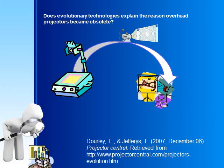Evolutionary technologies provides a reasonable explanation of the obsolescence of the overhead projector. New technologies enhanced the overhead projector's abilities, as seen in the digital projection system. Interestingly, the digital projection system was required to sit on top of the overhead projector to function — it, in fact, extended the usefulness and capabilities of the overhead projector.